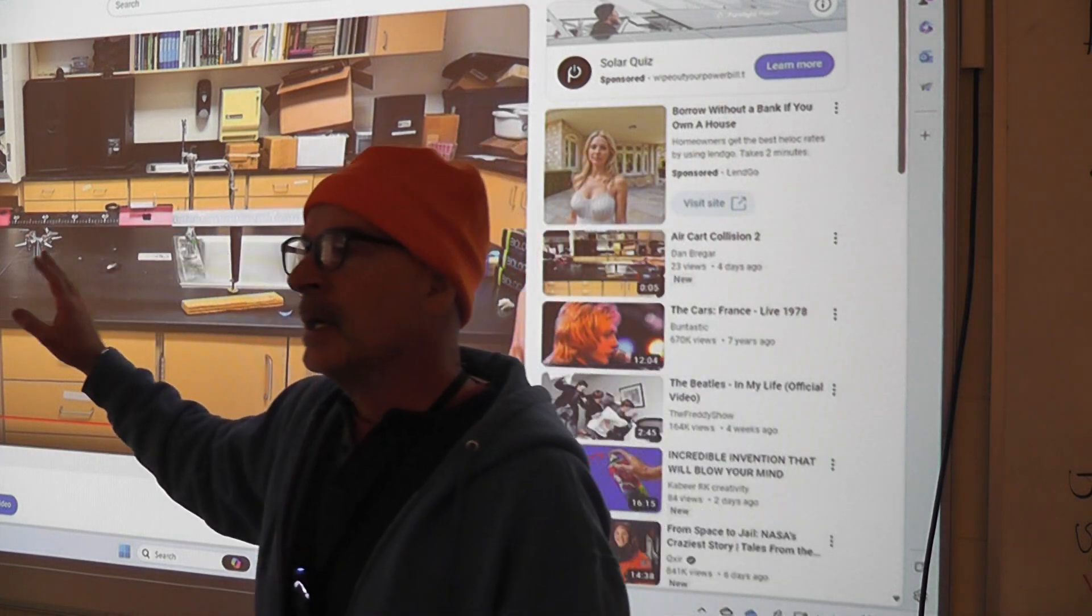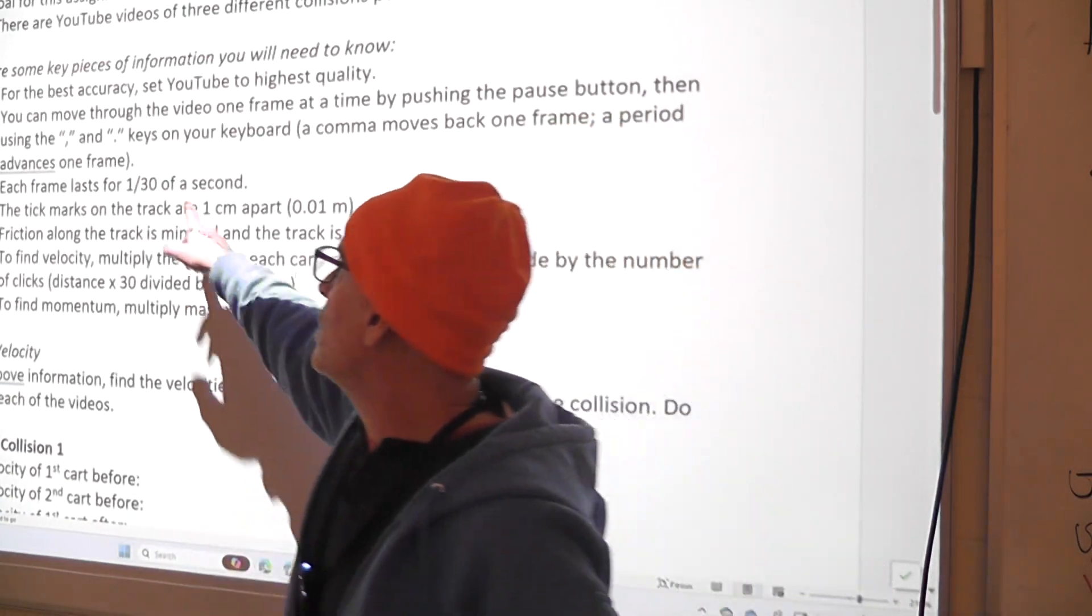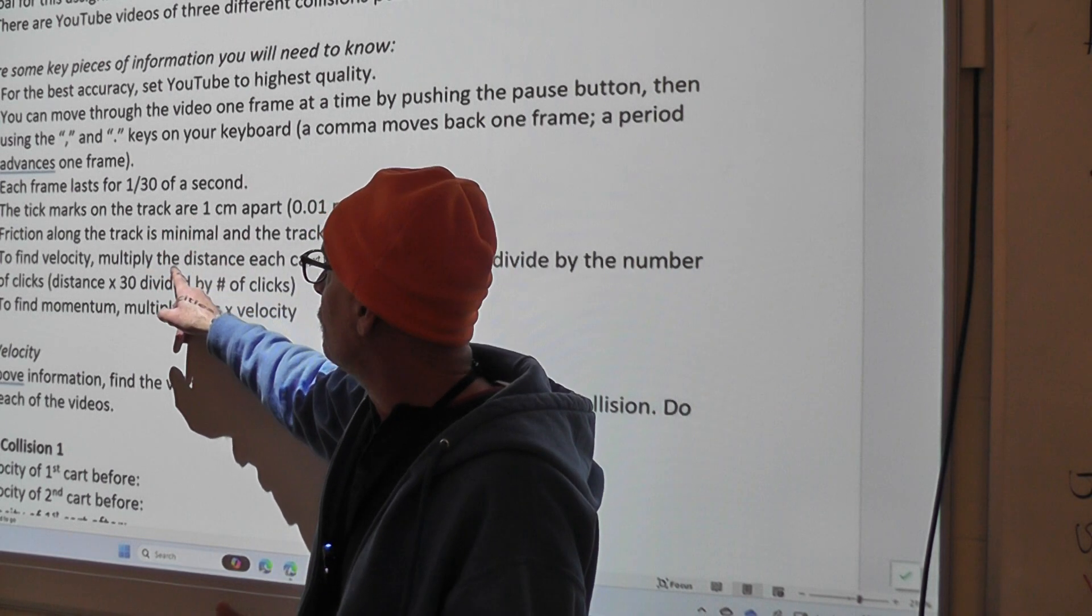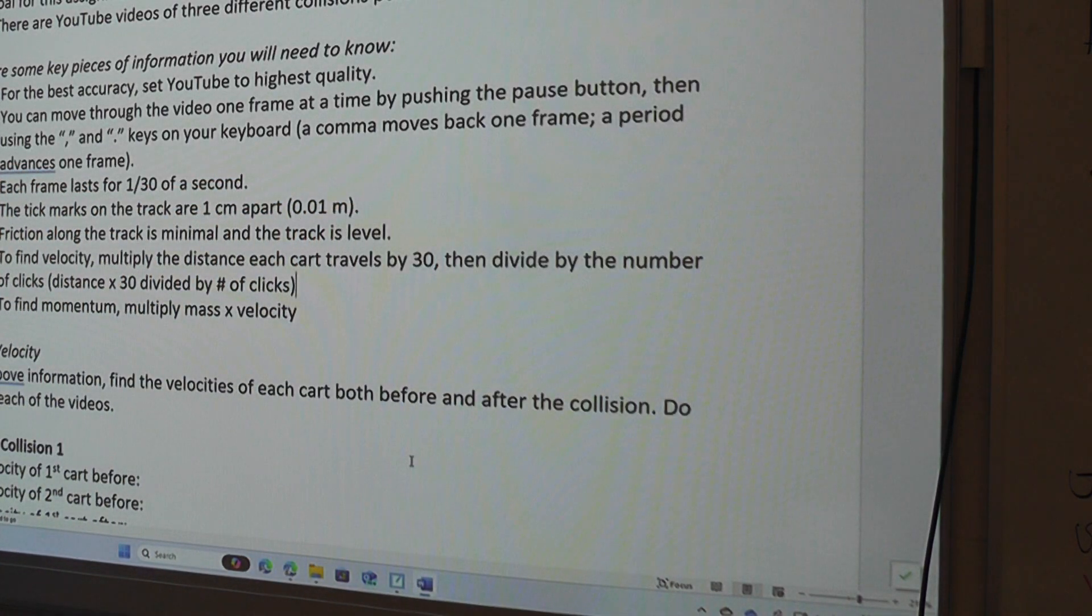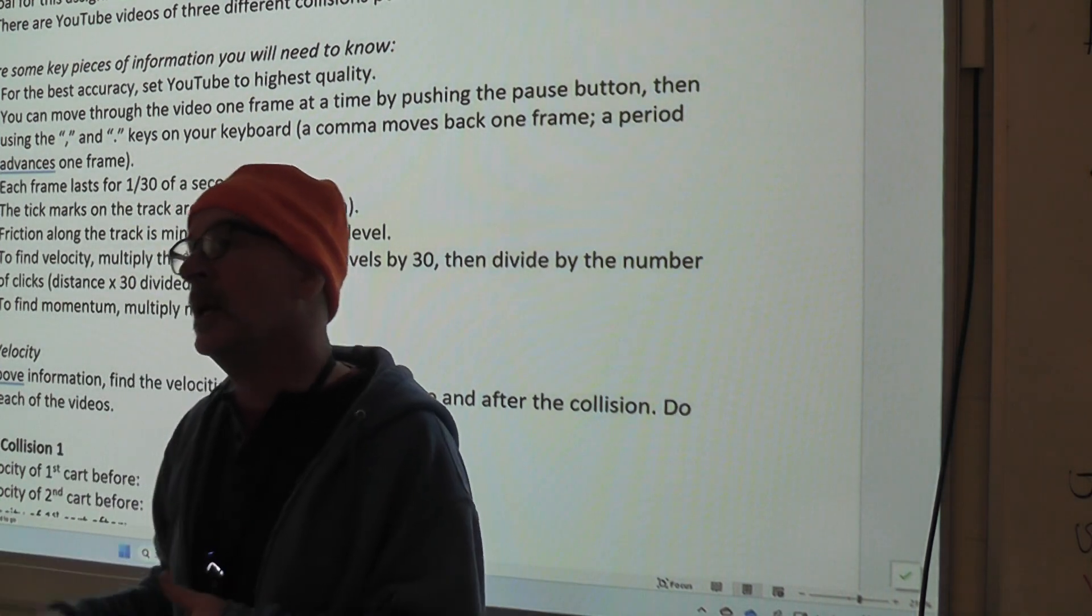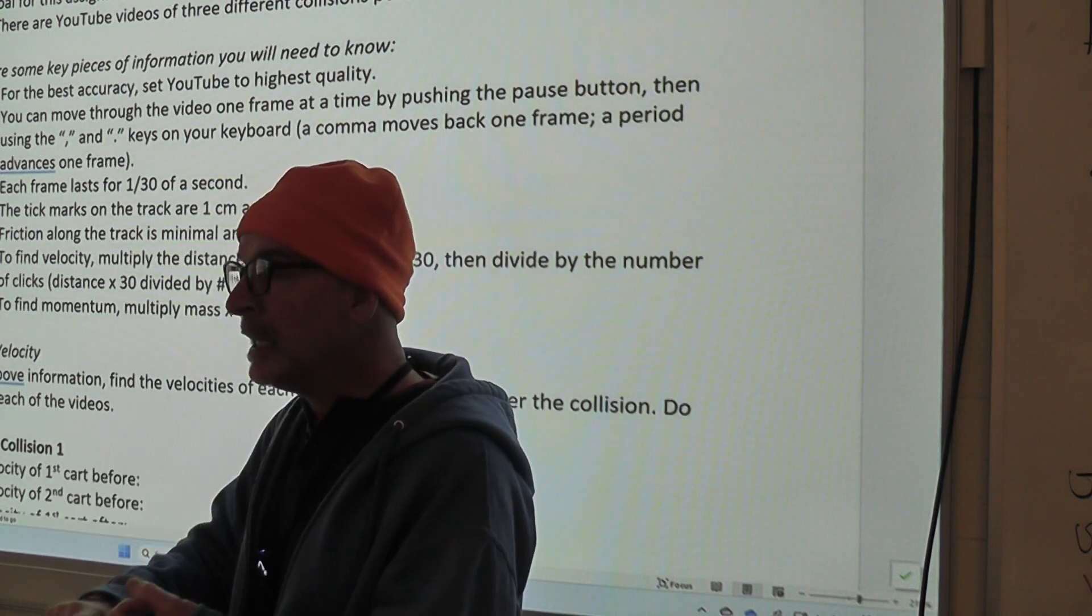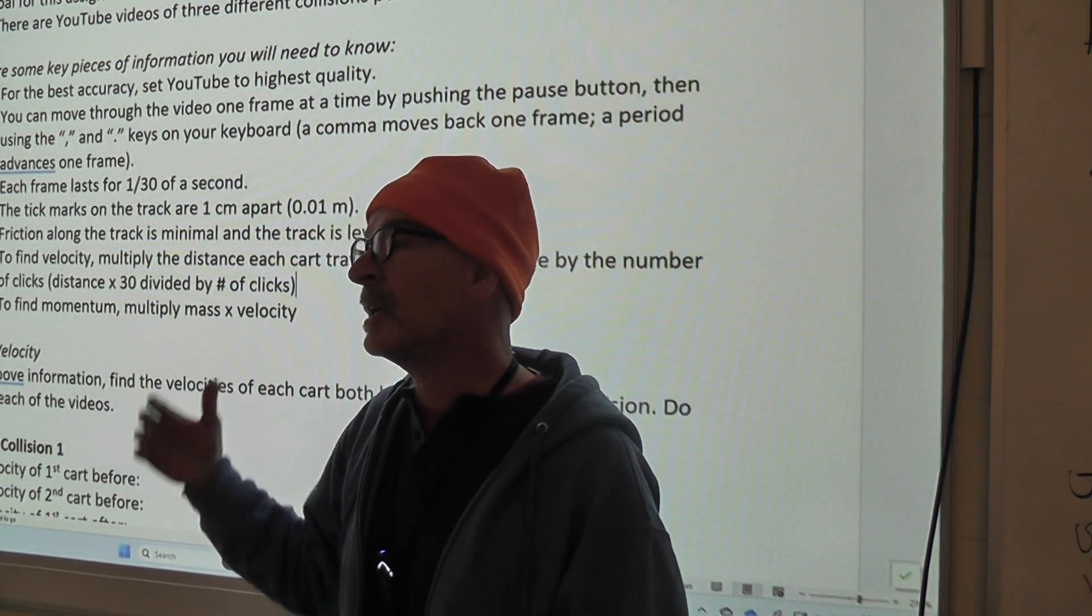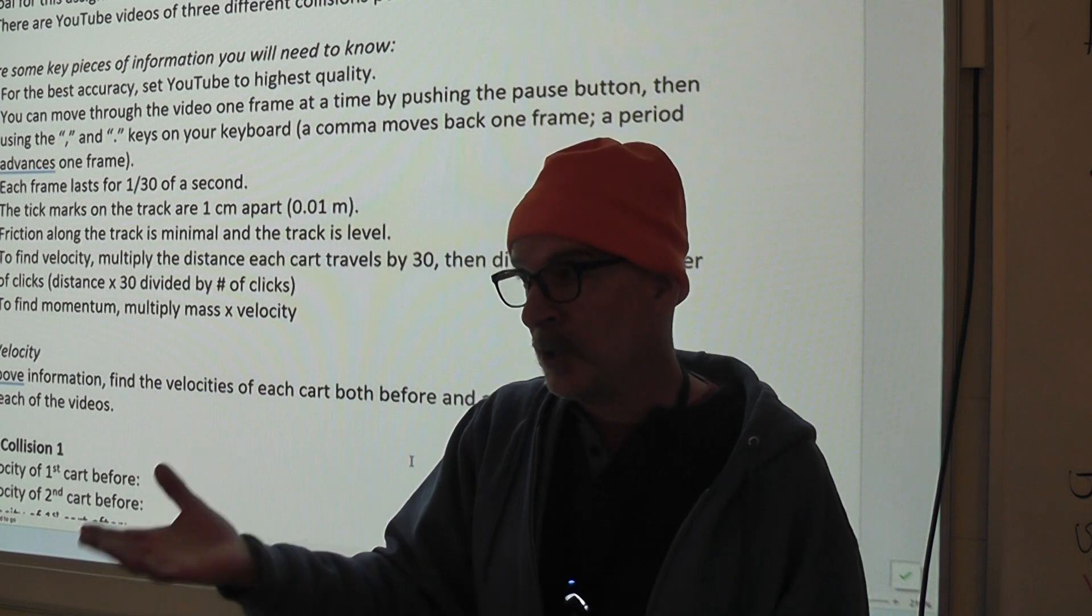So what I showed you the other day is listed in the assignment. All the instructions are here. It tells you that each frame is a thirtieth of a second. It tells you that the tick marks are one centimeter apart. It tells us that we can find velocity by doing a calculation. I'm also going to show you everything right now, and this video will be posted to Canvas so that if you forget, you can watch the video. Ideally, what's going to happen is when you get back to the computer lab, you'll either be able to use your memory, your notes, or the video to get the same kind of information that I'm about to show you. If you have questions as I'm going, please ask, because if there's something you don't understand, then I can explain it to you while we're sitting right here.